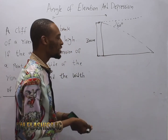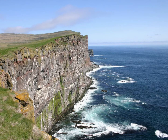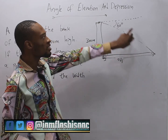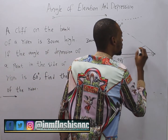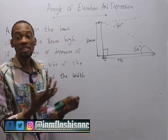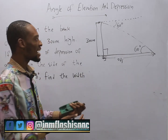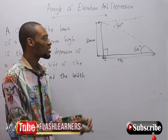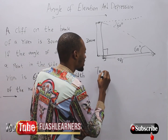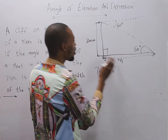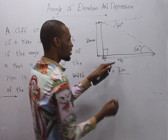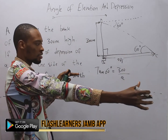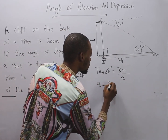Find the width of the river. The river begins here and ends here, so this width is what we're looking for — it is the adjacent side. This forms a right-angled triangle. The angle here and here are alternate angles, so the angle at the base is also 60 degrees. tan 60° equals opposite (300 m) over adjacent (a). Let here be point a, b, c — so BC is the width of the river. Therefore a equals 300 over tan 60°.